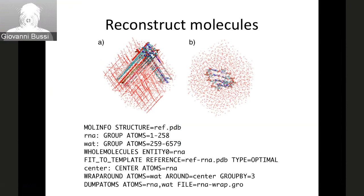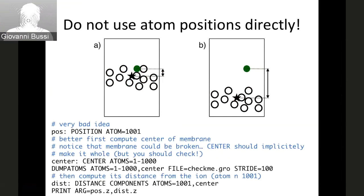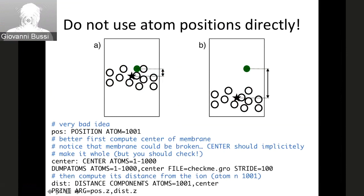A final important thing to remember is that most simulations are performed such that the total energy is invariant with respect to rigid shifts of all particles. If you want to compute the vertical position of an ion relative to a membrane, you might be tempted to use the position collective variable - but this is a very bad idea. If the membrane translates vertically, the same ion position would have a completely different meaning. A much better solution is to compute the position of the center of the membrane and monitor the vertical distance between that point and the ion. The distance CV with the components flag defines three components accessible as dot X, dot Y, and dot Z.